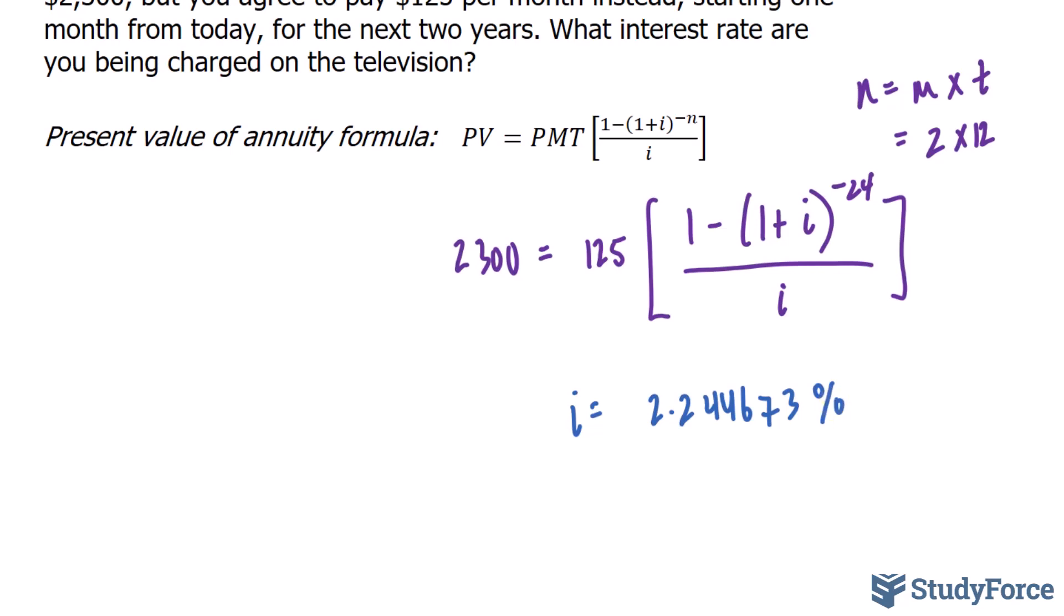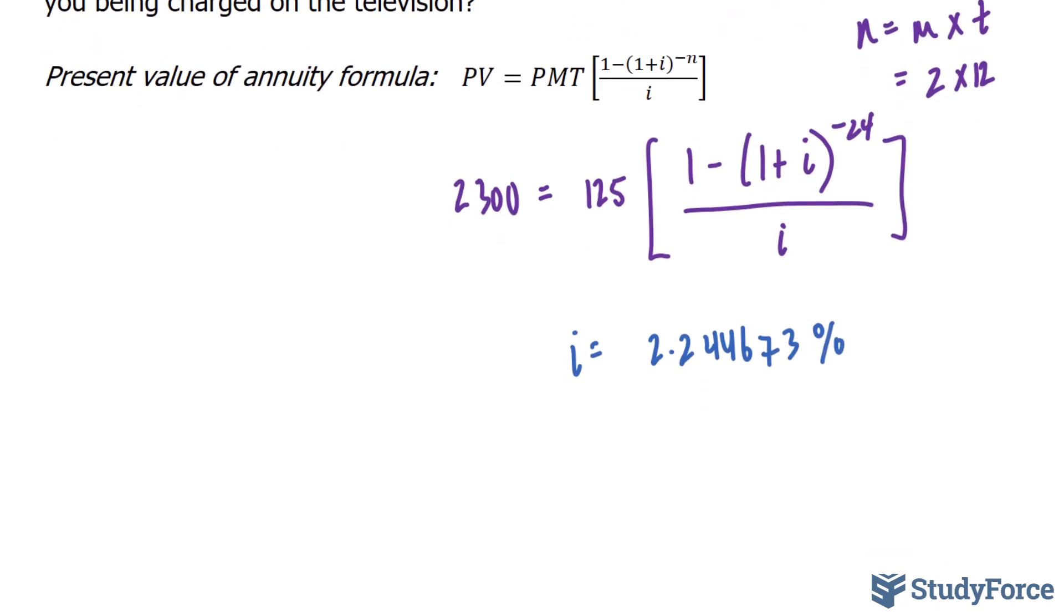Now, if you're looking for the nominal rate, you would have to remember that I is equal to the nominal rate, which we typically represent as R, divided by T. Again, T being 12.